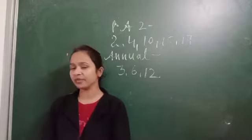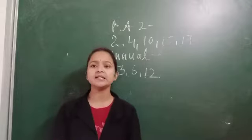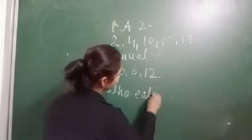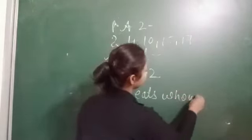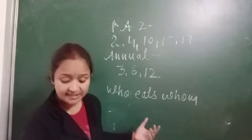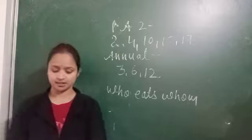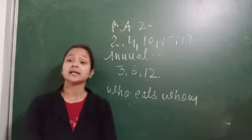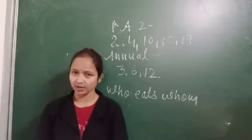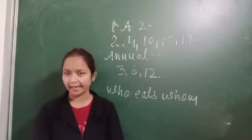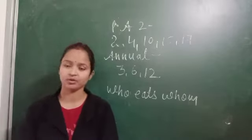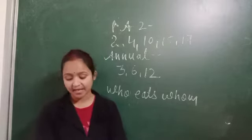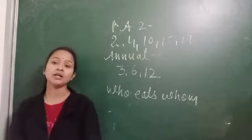Food chain is the sequence in which it is given who eats whom. This starts with green plants — green plants eaten by the caterpillar, caterpillar eaten by the frog, frog is eaten by the snake, snake is eaten by an owl. So this is the sequence and it maintains a balance in nature.